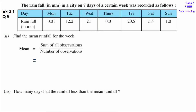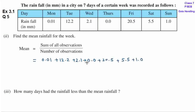So, equals to — इन सारी values: 0.01 plus 12.2 plus 2.1 plus 0.0 plus 20.5 plus 5.5 plus 1.0, upon number of observations है 7. वैसे भी यहां पर question में दिया हुआ है 7 days.